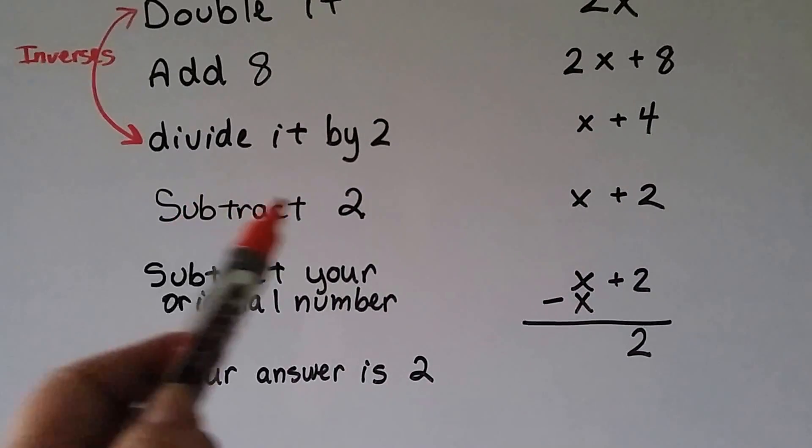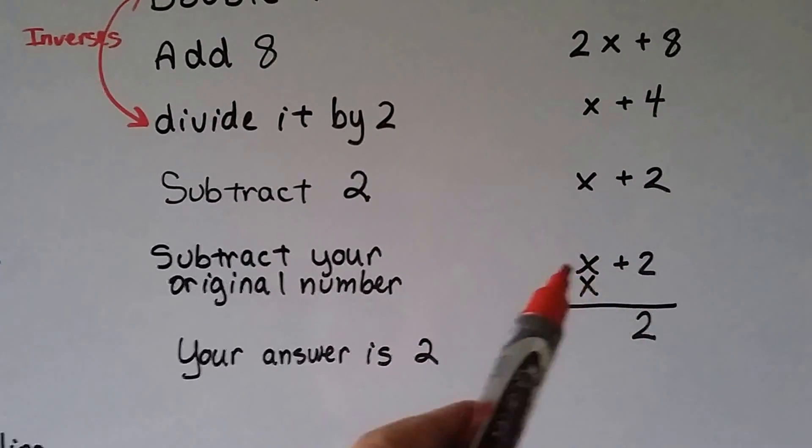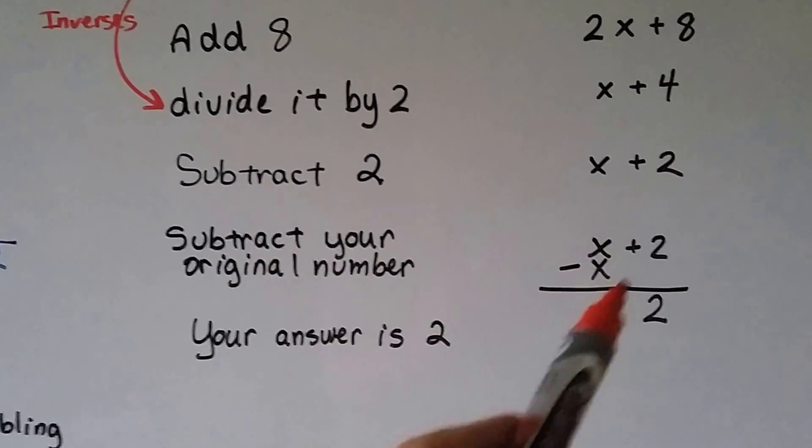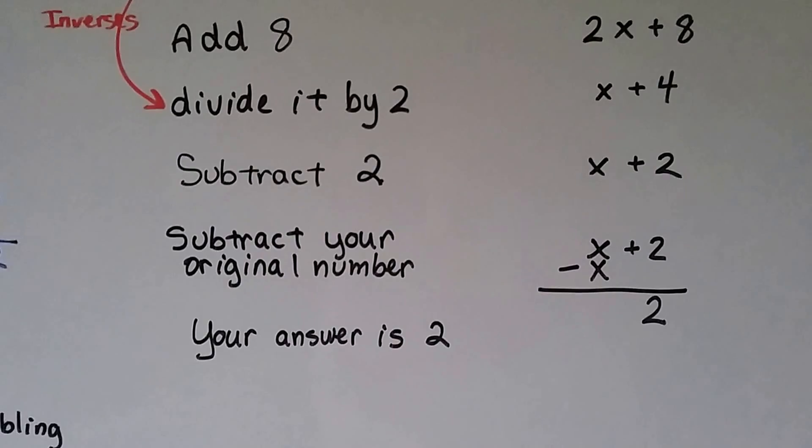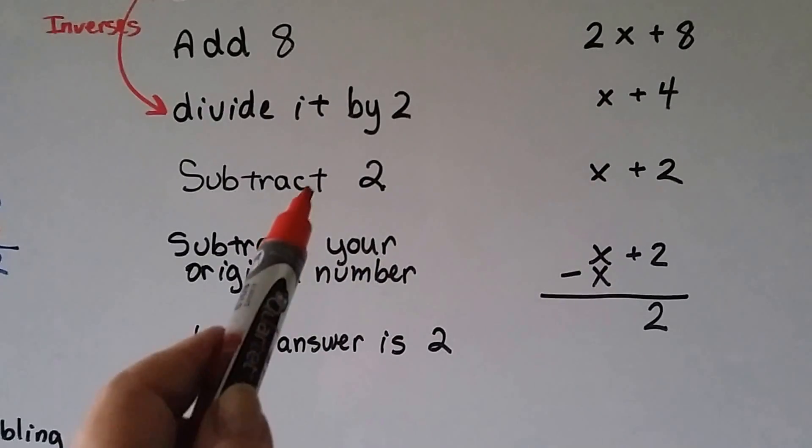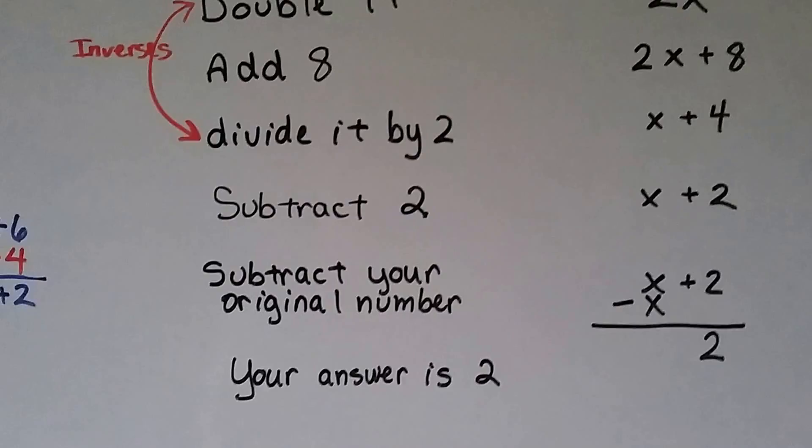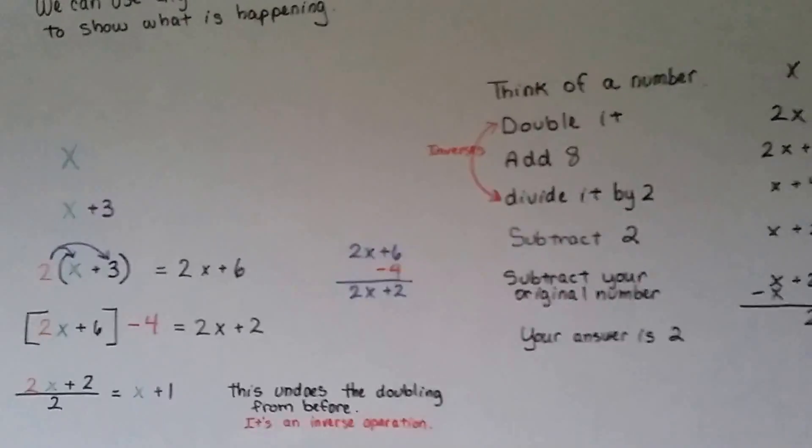Now, I could have said subtract 3 here so that 4 take away 3 is 1, and we could have had x plus 1 again, and I would have told you to subtract your original number, and we would still had 1, and I could have said your answer is 1. I could have said subtract 1, and your answer is 3. I could have changed it any way I wanted to. So it's not really magic. It's just a matter of math.